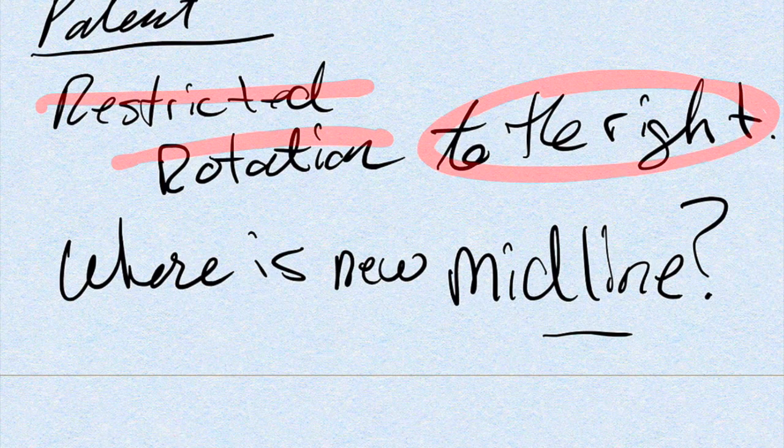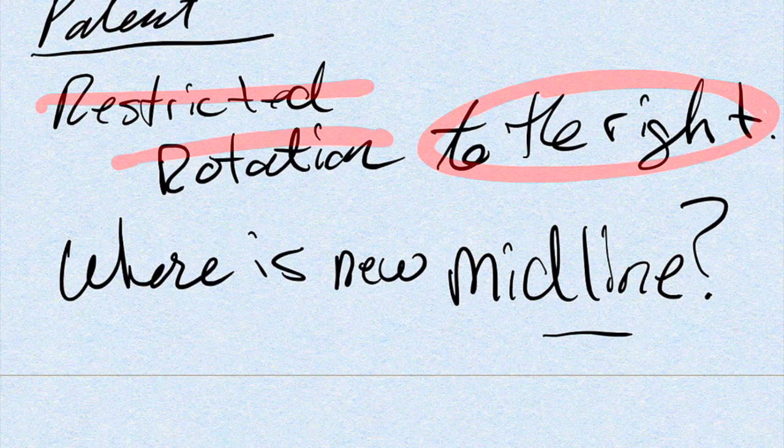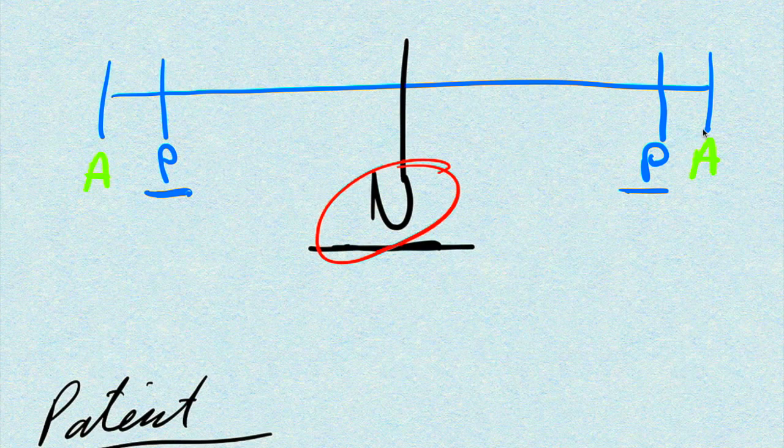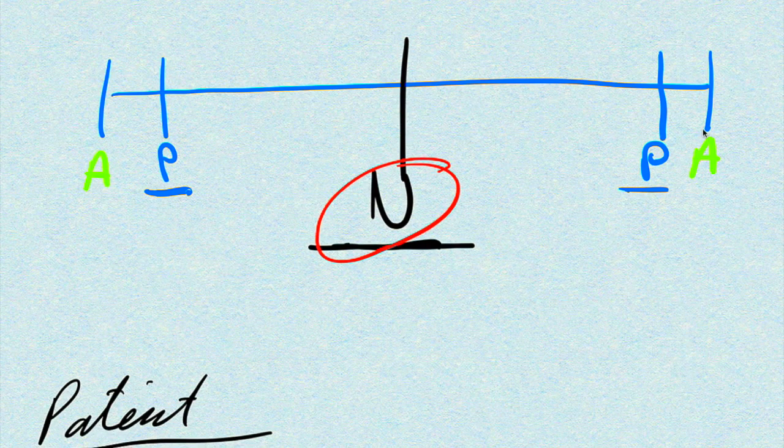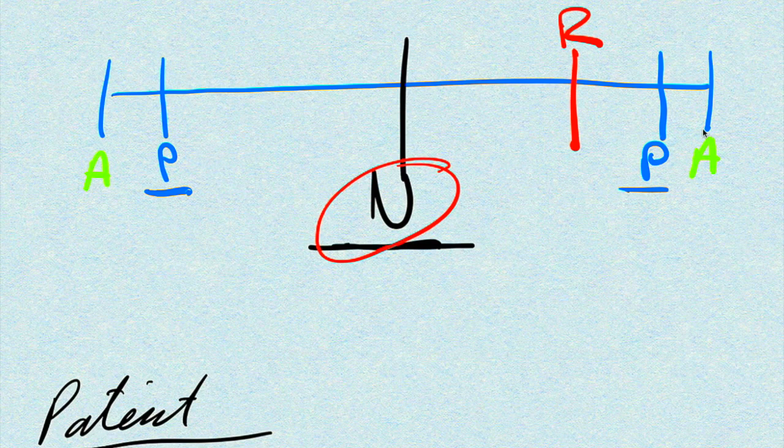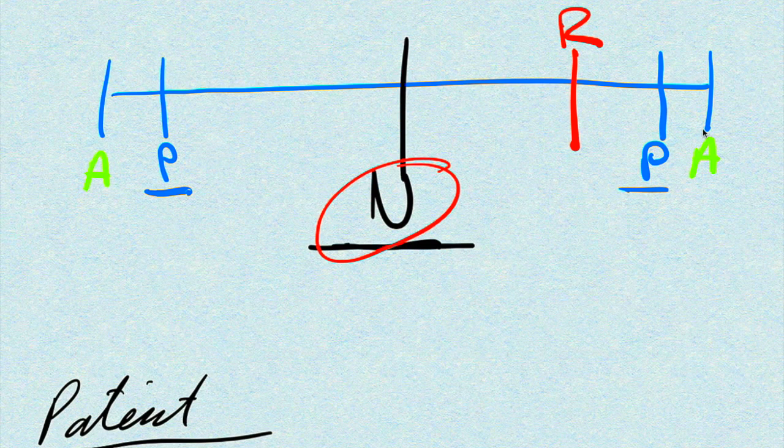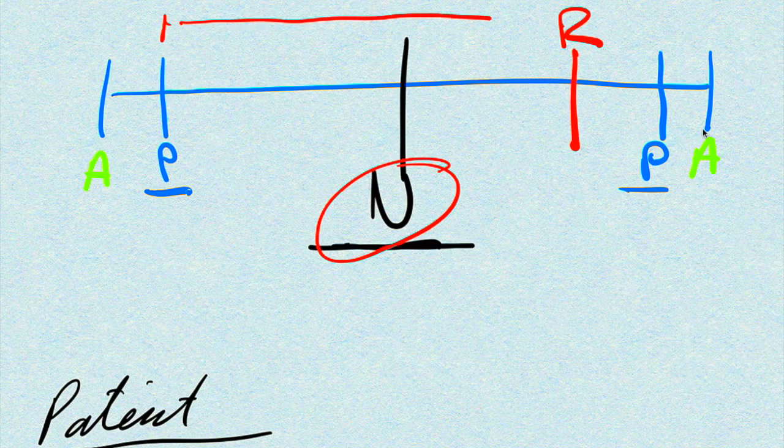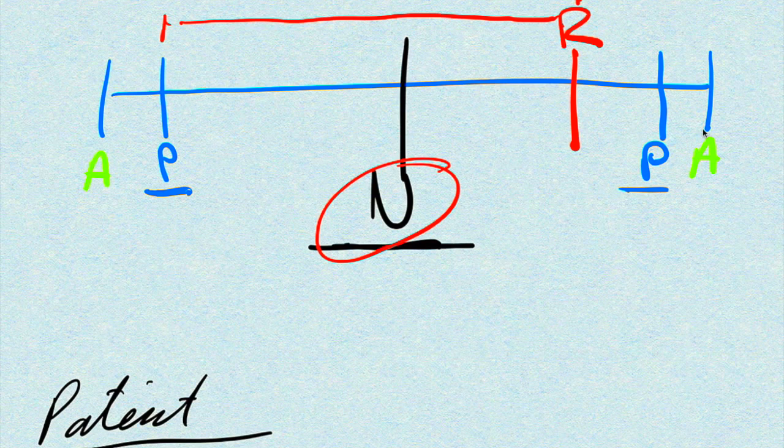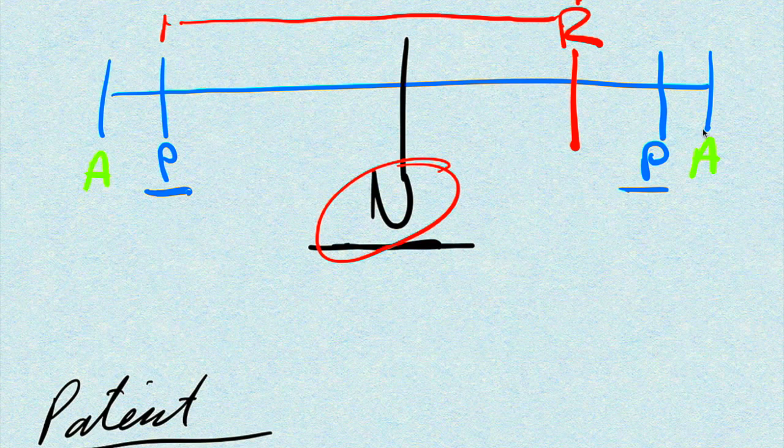and the question that you have to answer or that you have to think about is the new midline. So let's say that we draw this on this chart here, or this graph, that the patient is restricted going to the right. And so now the new distance between the two limits of the motion, which now is the restrictive barrier on the right and the physiologic barrier on the left, is going to be our new pathologic neutral.